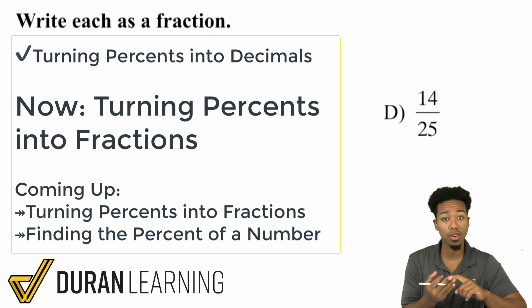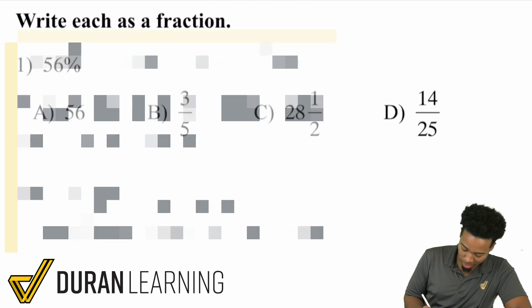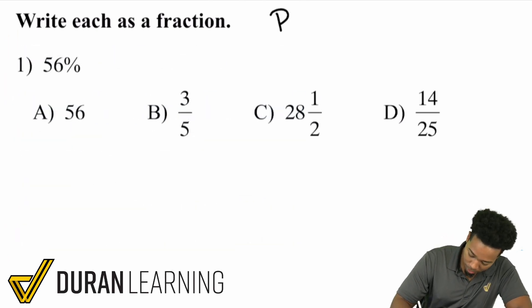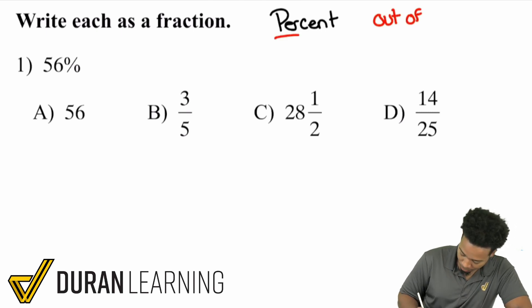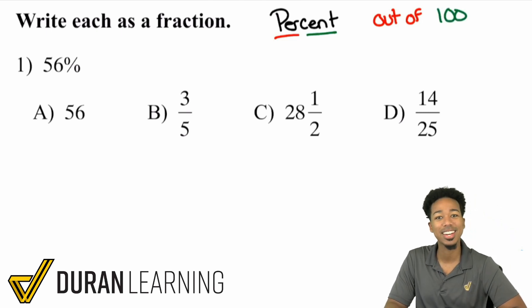Remember, percents, decimals, fractions, they're all just numbers. They're just in their own little language and that's it. But let me show you how to turn a percent into a fraction super easy. Because remember, what did we learn in the last video? When we're talking about percents, percent literally means out of a hundred. Percent means per, out of, and the cent means 100. So the word percent literally translates to out of a hundred.